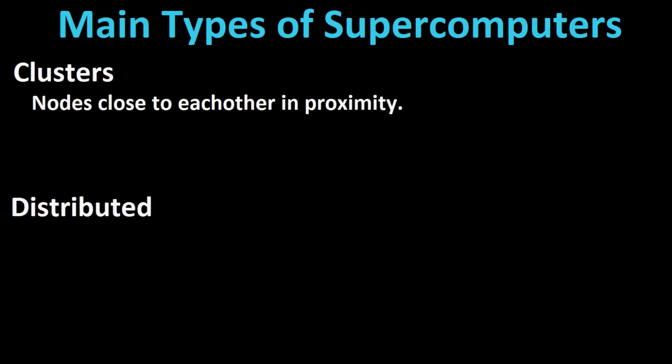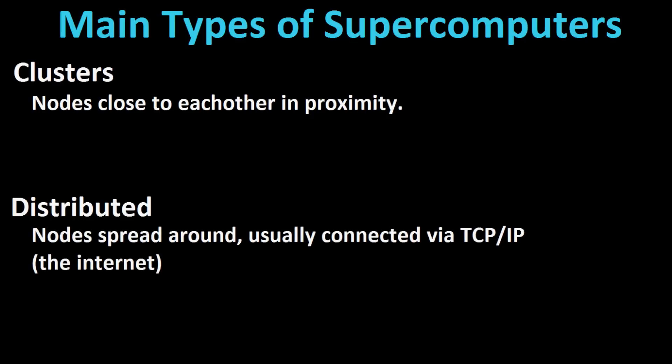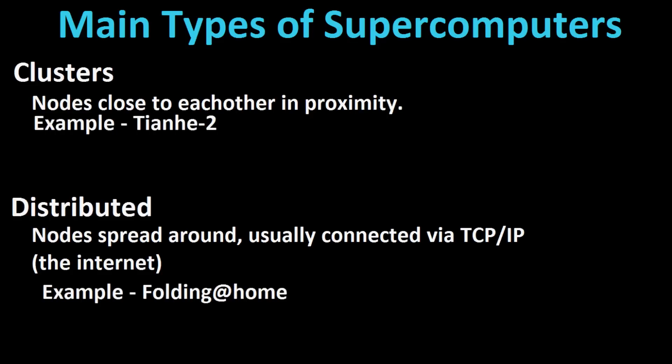Then you have distributed systems, where you have a network of computers spread around — hence distributed — connected via something like the internet and TCP/IP. Distributed supercomputers are generally far more lax when it comes to efficiency. They can contain all kinds of devices: computers, phones, tablets, desktops, netbooks, laptops. Folding@Home is an example of this massive distributed supercomputer.